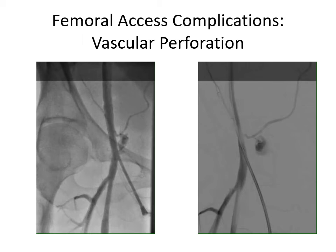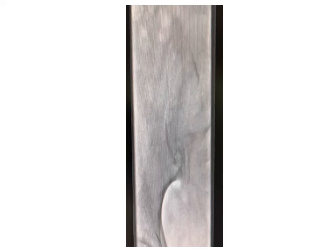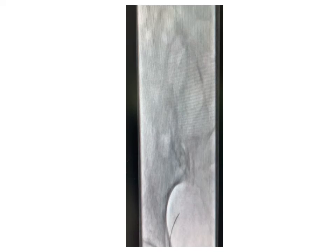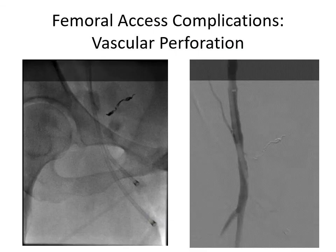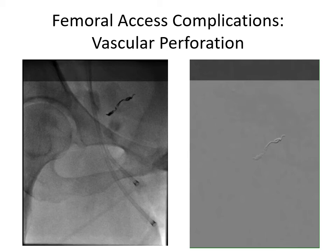Using fluoroscopic guidance when advancing the micropuncture wire can help avoid this complication. This very technique is demonstrated in this short video. Back to our case, the patient went on to have coiling of the inferior epigastric artery, which successfully controlled the bleeding, and she recovered without difficulty.